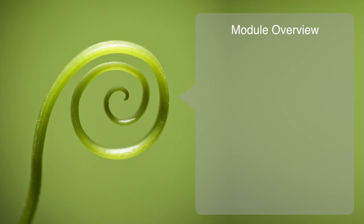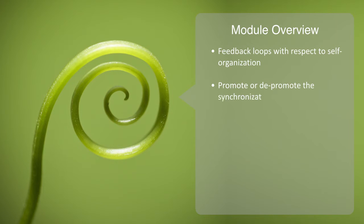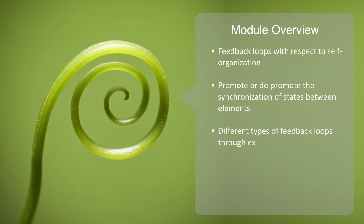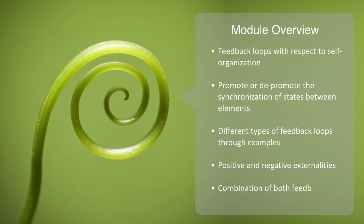In this module, we will be discussing the role of feedback loops with respect to self-organization by looking at how they work to promote or depromote synchronization of states between elements within complex adaptive systems. We will start by talking about the different types of feedback loops while also discussing a number of examples. We will then look at positive and negative externalities and finish by talking about the effects of combining both feedback loops and externalities.